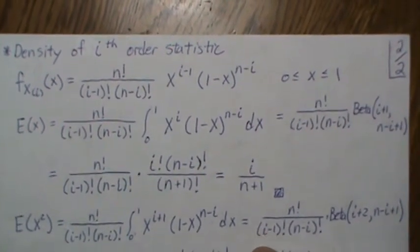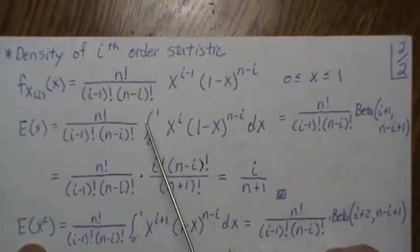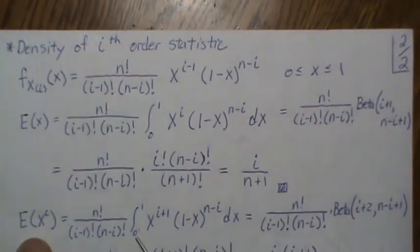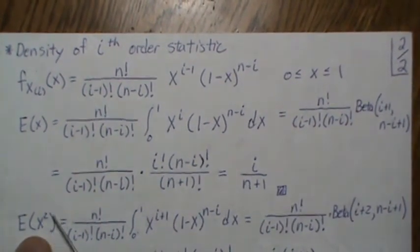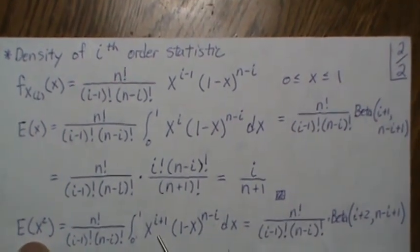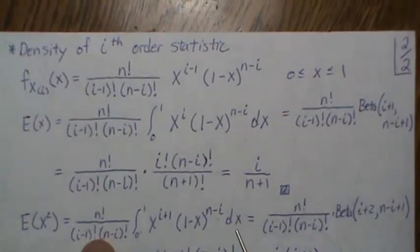Now the second moment is you take X squared times this joint density, and then integrate it over all possible values, zero to one. So when we take that X squared in, that's why we get i plus one. And then everything else comes down, the constant comes down, integrate.